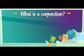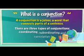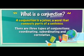So, what is a conjunction? Well, a conjunction is a joiner — a word that connects parts of a sentence. There are three types of conjunctions: coordinating, subordinating, and correlative. Today we're going to look at the subordinating conjunctions, also called subordinate conjunctions.